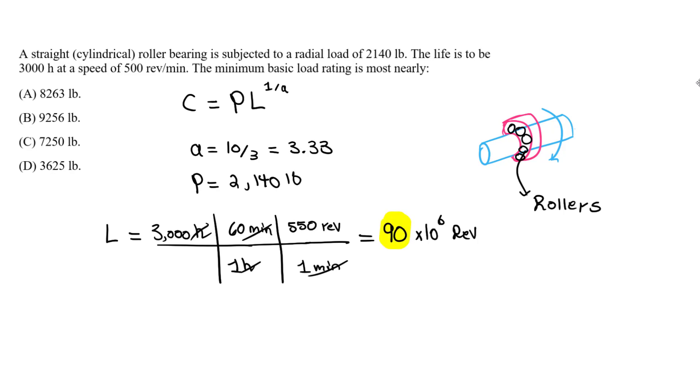So our P value is going to be 2,140 pounds. And this P value—I didn't say this—it's only applied in the radial direction. This is radial. So this accounts for our P value. If we had a force this way, a load this way, it would be the thrust. So we would have to account for the axial direction as well. And for the axial direction, there are different equations we will go over in the future.